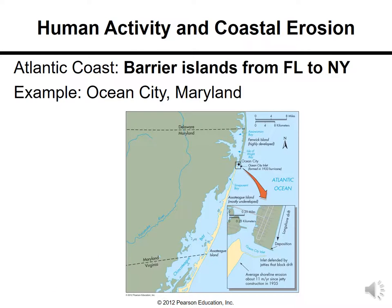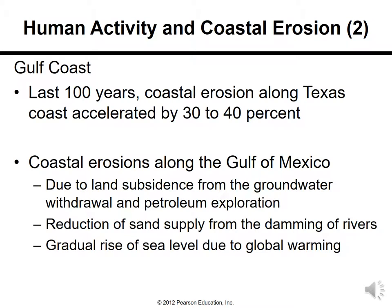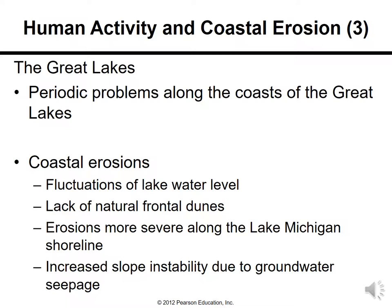Human activity and coastal erosion: along the Atlantic coast there are barrier islands from Florida to New York, with Ocean City, Maryland as one example. Over the last 100 years, coastal erosion along the Texas coast has accelerated by 30 to 40 percent. Erosion along the Gulf of Mexico is due to land subsidence from groundwater withdrawal and petroleum exploration, reduction of sand supply from the damming of rivers, and the gradual rise of sea level due to global warming. The Great Lakes also experience periodic coastal problems, fluctuations in lake water level, lack of natural frontal dunes, severe erosion along Lake Michigan shoreline, and increased slope instability due to groundwater seepage.